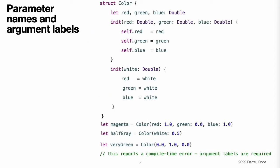Parameter names and argument labels. As with function and method parameters, initialization parameters can have both a parameter name for use within the initializer's body and an argument label for use when calling the initializer. However, initializers do not have an identifying function name before their parentheses in the way that functions and methods do. Therefore, the names and types of an initializer's parameters play a particularly important role in identifying which initializer should be called.